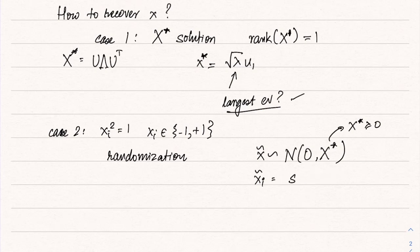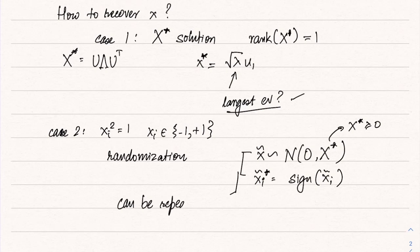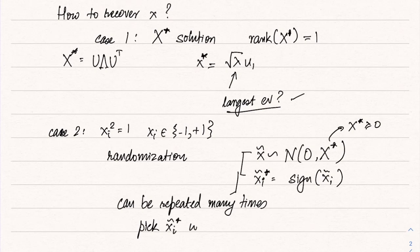Then we set x_i = sign(x̃_i). This can be repeated many times, generating tens of thousands of candidate solutions by sampling and taking signs. From all these candidate solutions, we pick the x̃ with the smallest objective value.